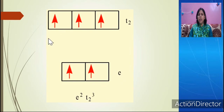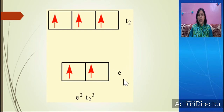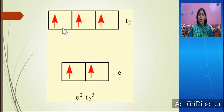You must carefully observe how electrons fill when splitting occurs in tetrahedral complexes. Electrons in d orbitals first go to E, then to T2, and they fill singly first. So in the case of D5 configuration, it becomes a half-filled configuration — half T2 filled and half E filled.